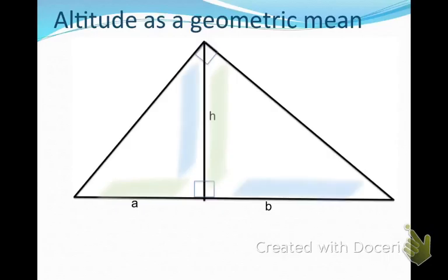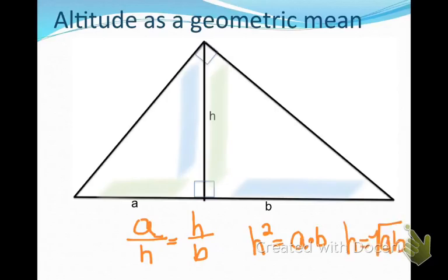what you have done is a is to h in the same ratio as h is to b. Now we've been learning about this as corresponding sides, but it's also the geometric mean. If you multiply these, you will see that h squared equals a times b. So h really is the square root of those two sides, a times b.